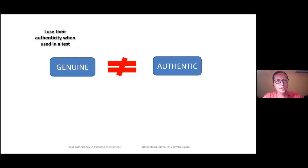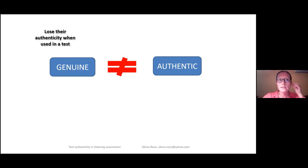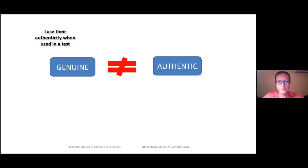Why does that happen? First, we think that if we take a genuine text and transfer it into the test, it keeps its authenticity. But we would argue that these texts lose their authenticity when used in a test because they are not used in the intended context, not with the intended audience, and not for their original purpose. So all authenticity except the spoken language features is lost in this situation. And very often in real-life spoken events there is no task that follows the listening event, so when we try to add a task to such material, it also inauthenticates them.